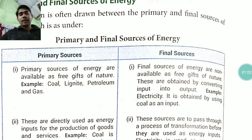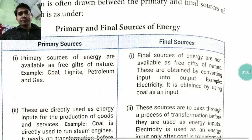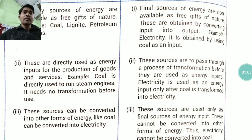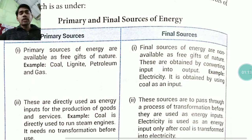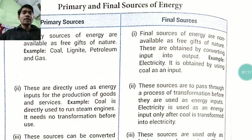Coal is a primary source. Primary sources are directly used as energy input for the production of goods and services. For instance, coal is directly used in a steam engine, whereas electricity needs transformation before use.